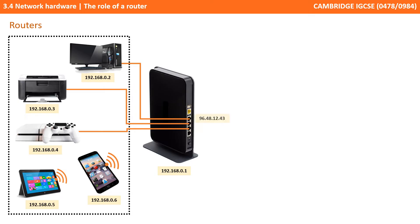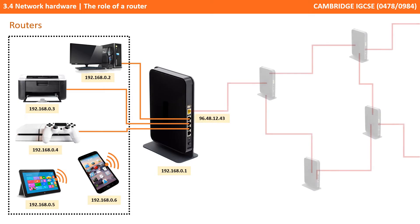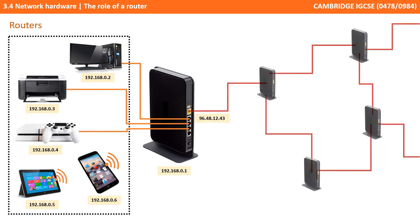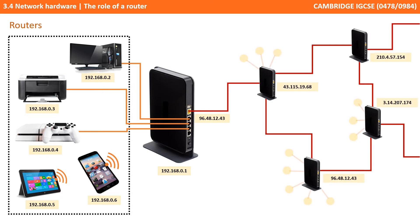The router also has an outward public facing IP address, and this allows it connection to the wider outside world — or in simple terms, the internet. Here we see a highly simplified and abstracted view, but we can see that the router can now connect to other routers on the internet, which indeed have connections to each other and their own local area networks.